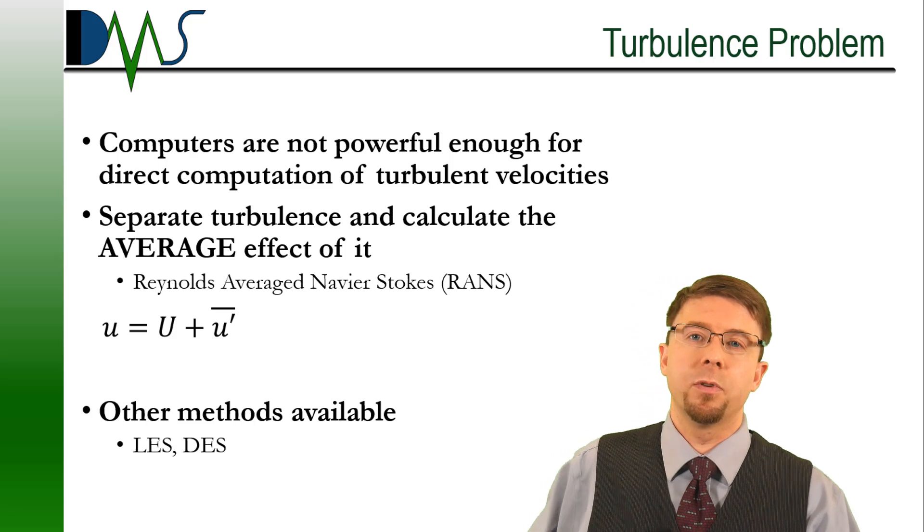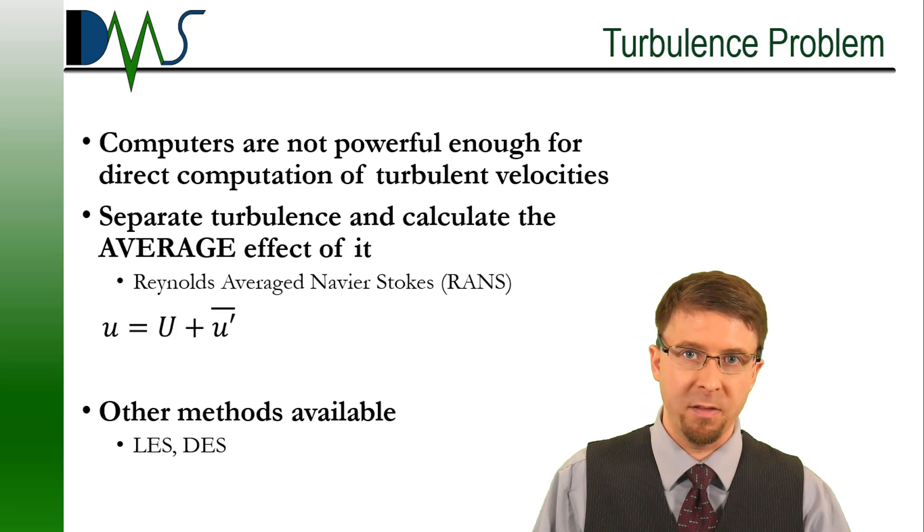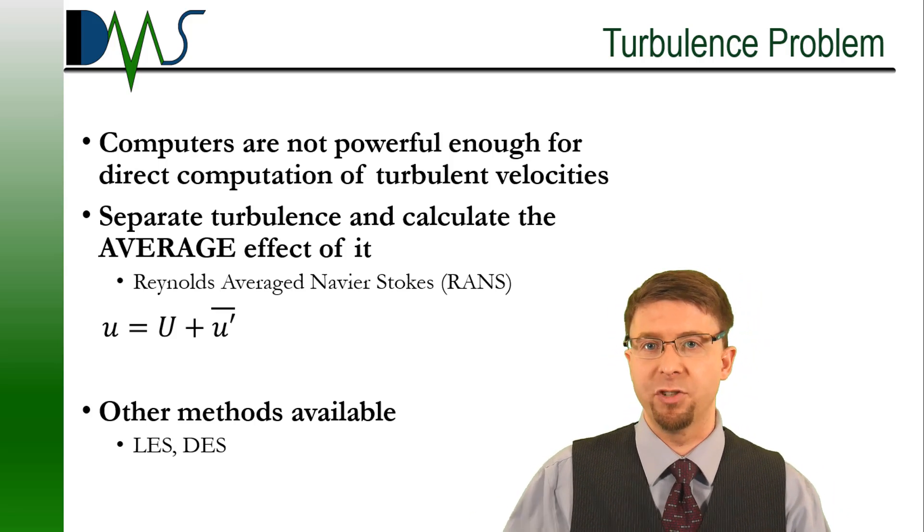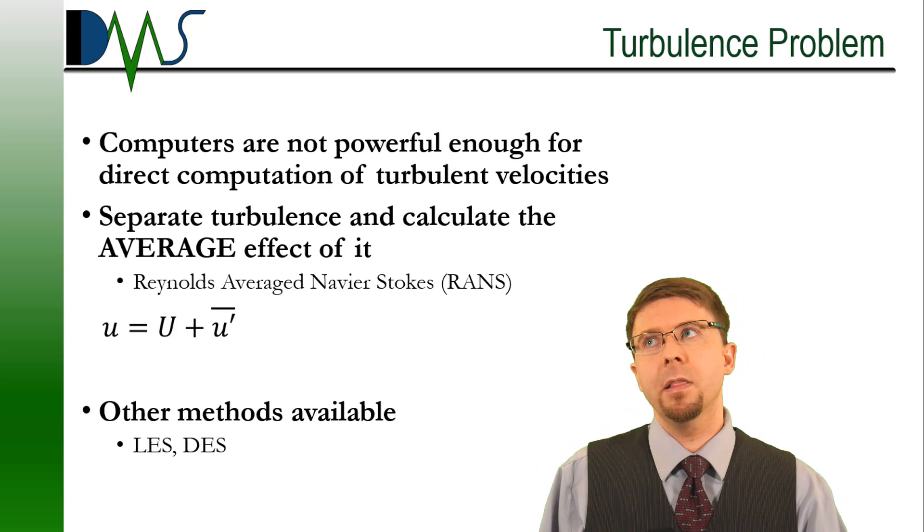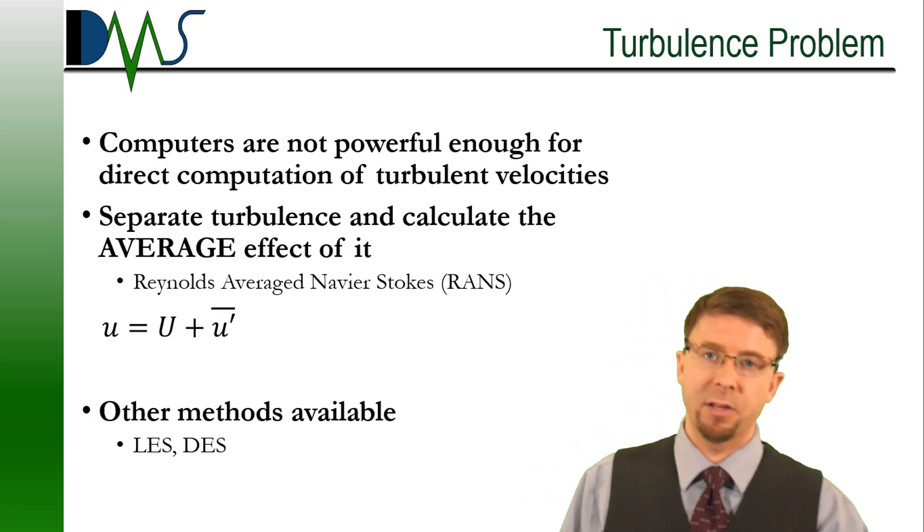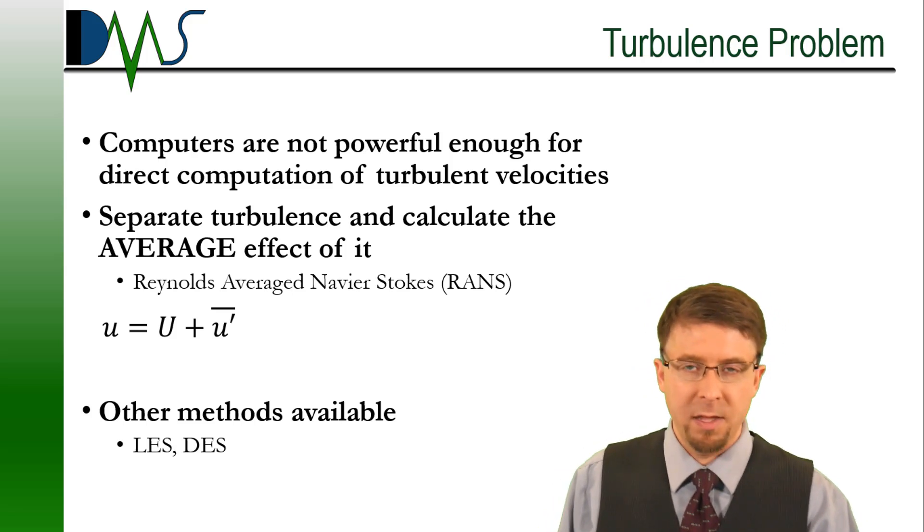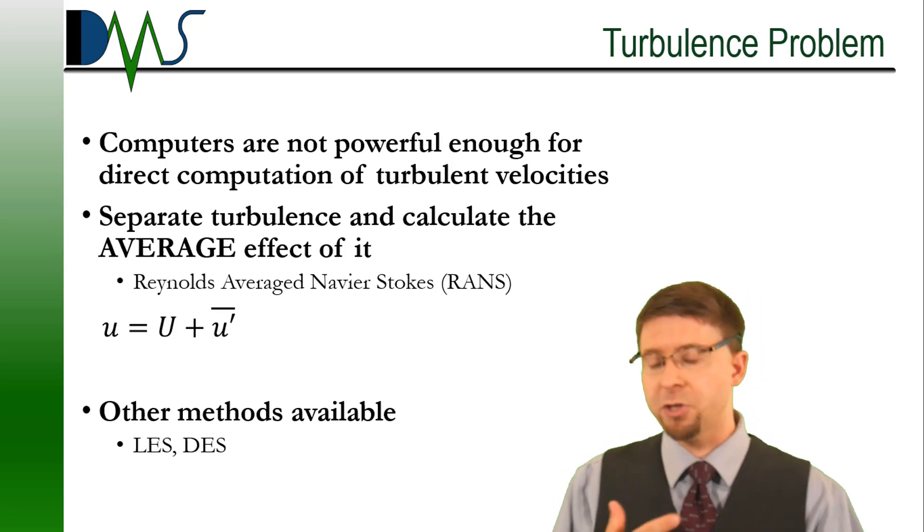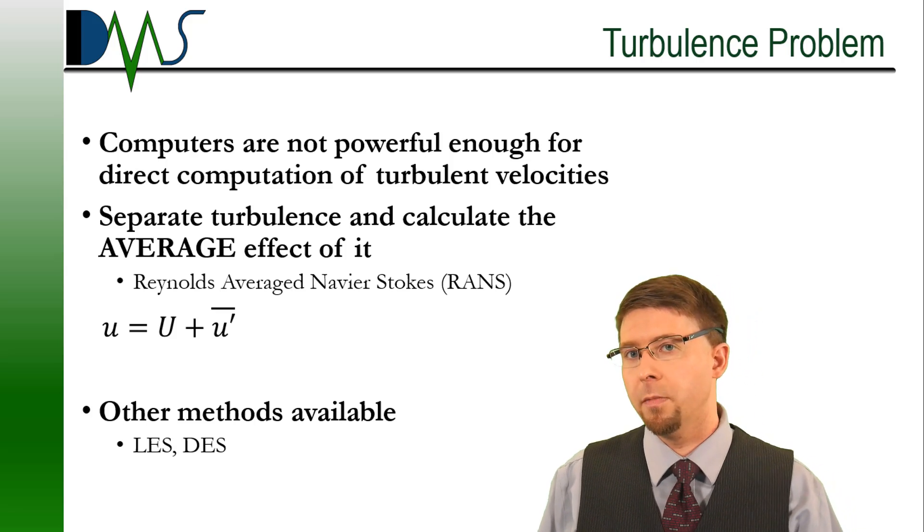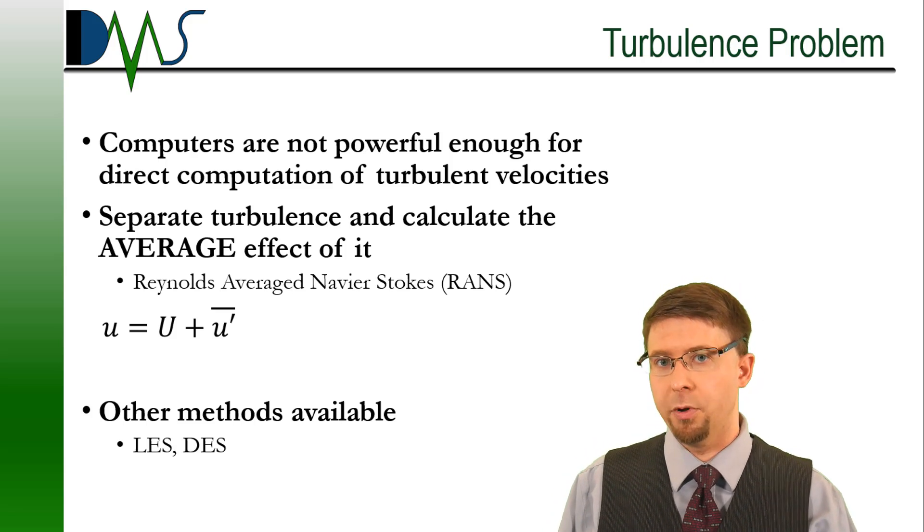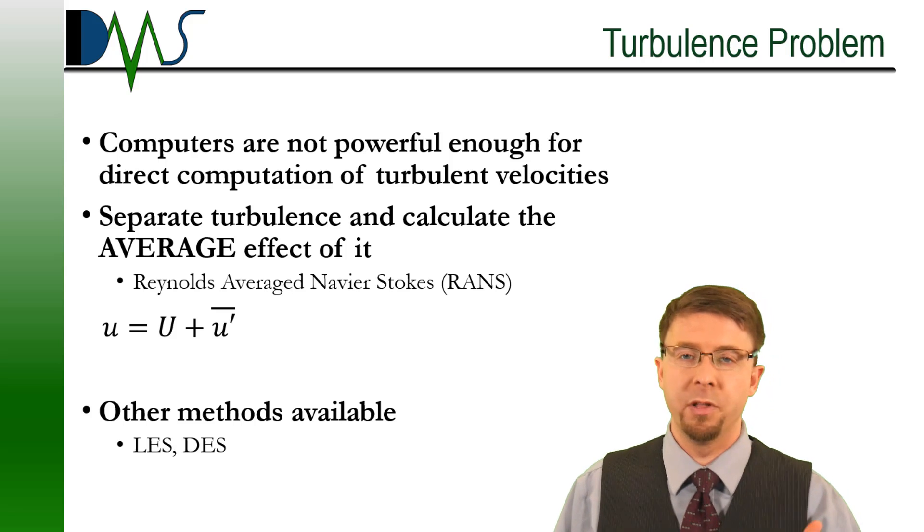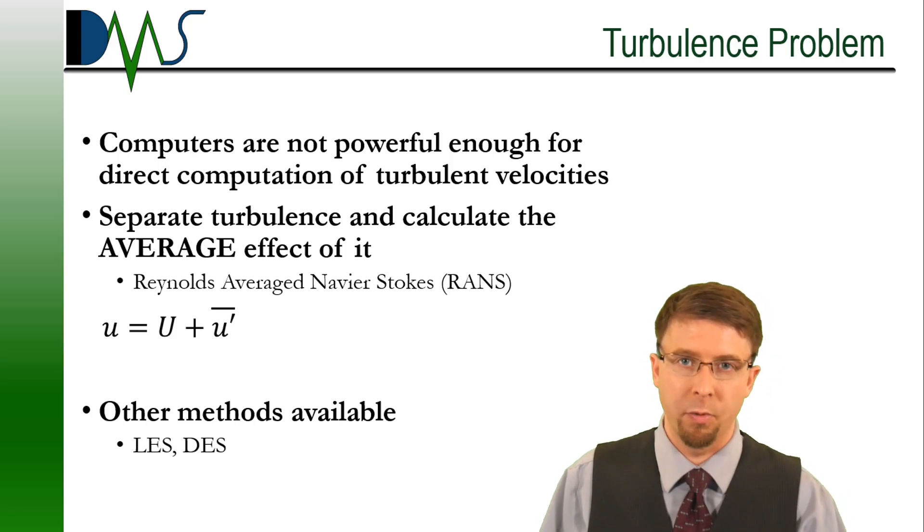And you can see there, we're taking that U, which is our main flow velocity, plus the U prime, our fluctuating velocity, but we're averaging it. Think of it like the light in your household. That light bulb is being powered by the electricity in your house. Now, you know that the electricity in your house is actually fluctuating very fast, but you don't actually see it because it's fluctuating too quickly. You're only concerned with the average light output. Same thing with turbulence. We're only concerned with the average turbulent effect. That is what the RANS approach is.